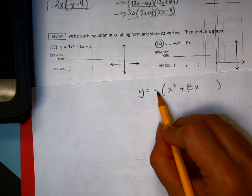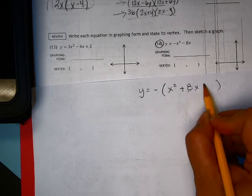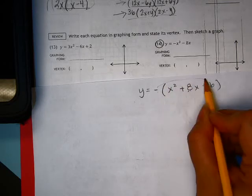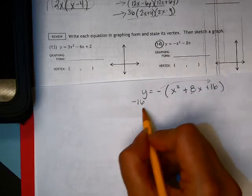And then after you take out the a value, then you divide by two in the square. So divide by two is four, squared is 16, but it's not really a 16, people, it's a negative 16. So in order to balance the equation, I put a negative 16 on the other side.